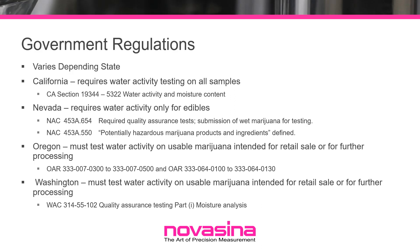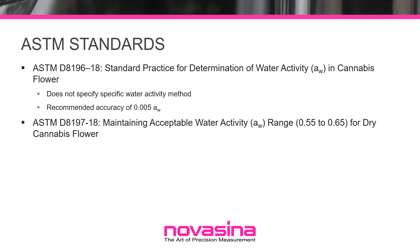The states that currently include water activity in their cannabis regulations include Nevada, which requires quality assurance tests and submission of wet marijuana for testing, and also defines potentially hazardous marijuana products based on water activity. California includes water activity and moisture content measurement requirements. Oregon states that you must test water activity on usable marijuana for sale or for further processing. Washington state includes quality assurance testing that requires moisture analysis and water activity testing on usable marijuana intended for retail sale or further processing. ASTM standards have also been established, including ASTM D8916-18 standard practices for determining water activity, ASTM D8197-18 standard for maintaining water activity, and an ASTM standard in progress for stability testing based on water activity.